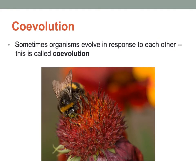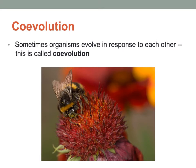Co-evolution is when two species evolve in response to one another. For example, the monarch butterfly's primary food source is milkweed. Milkweed developed a milky poisonous substance over time to prevent other organisms from eating it. The monarch butterfly evolved the ability to eat milkweed and not die from the poison. So monarch butterflies evolved in response to the milkweed's ability to create that poison. When organisms have a close relationship, we see co-evolution.